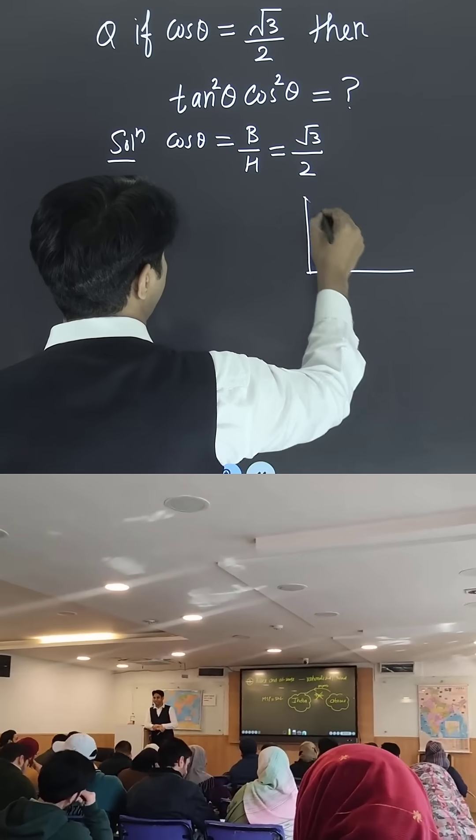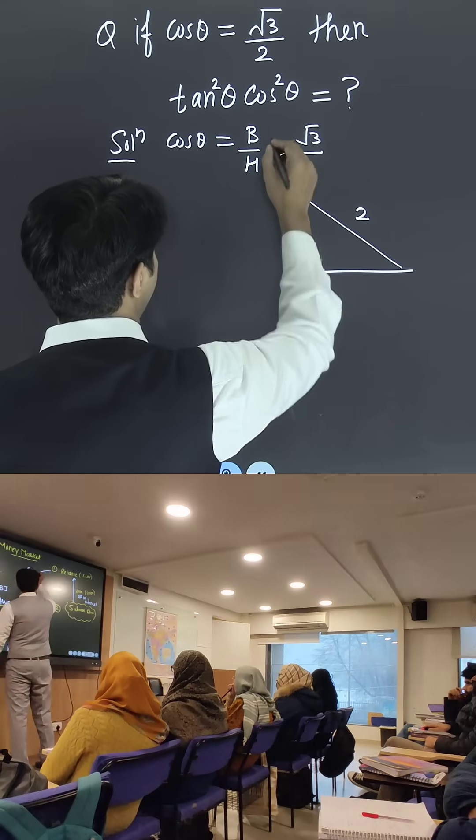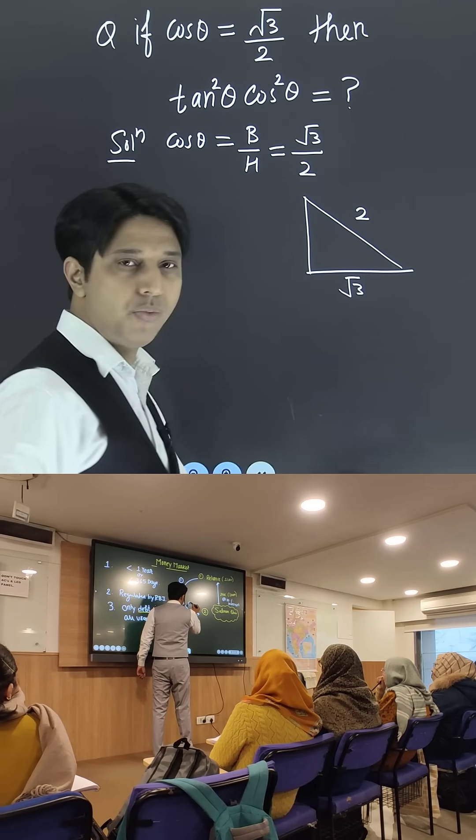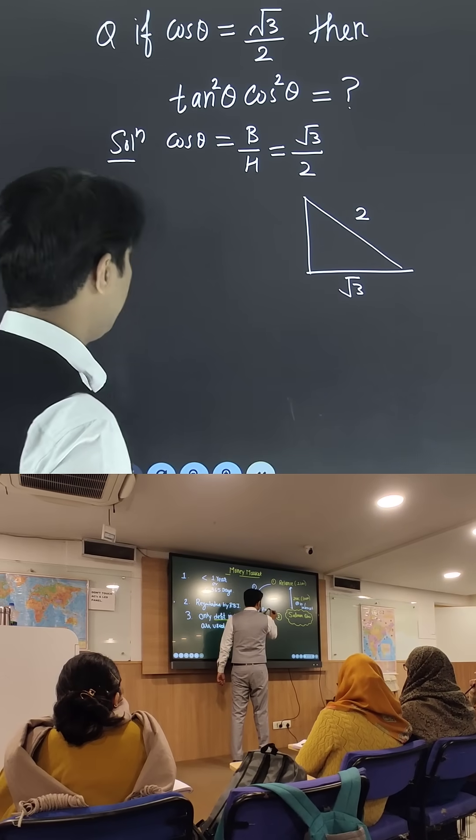If I draw the right angle triangle, hypotenuse is 2, base is √3. Fine. You have to find the value of perpendicular.